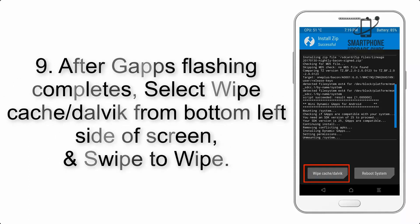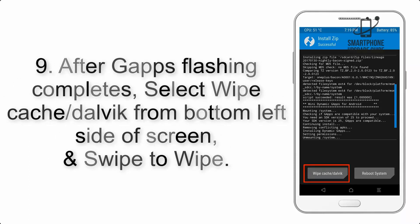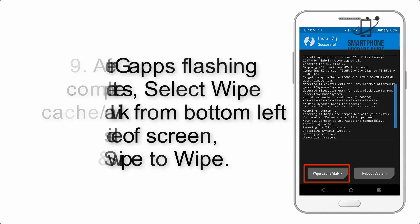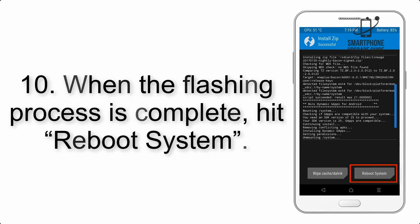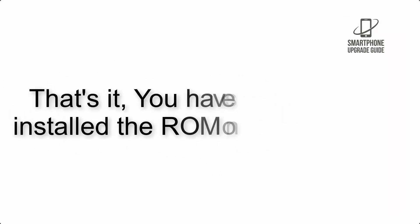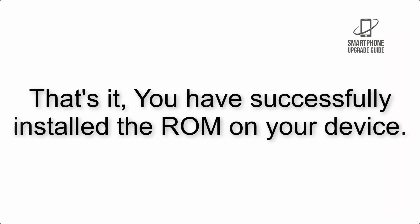Step 9: After GApps flashing completes, select Wipe Cache and Dalvik from the bottom left side of the screen and swipe to wipe. Step 10: When the flashing process is complete, hit Reboot System. That's it — you have successfully installed the ROM on your device.